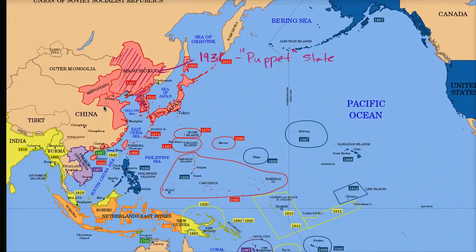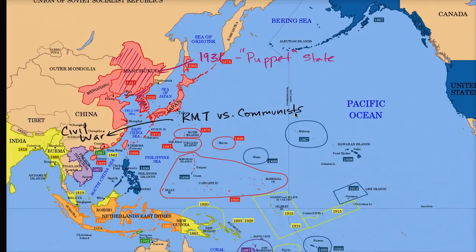We need to remember what is happening in China in the 1930s. China is embroiled in a civil war between the Nationalists — the Kuomintang — and the Communists. The Communists are led by Mao Zedong, and the Kuomintang is led by General Chiang Kai-shek. So they're in the midst of a civil war.